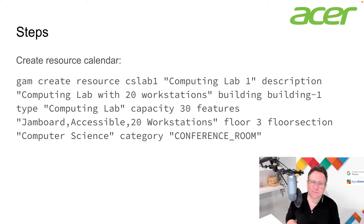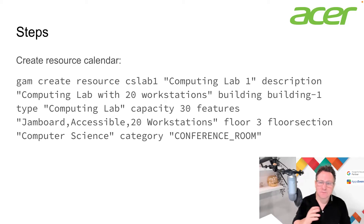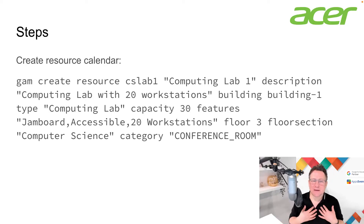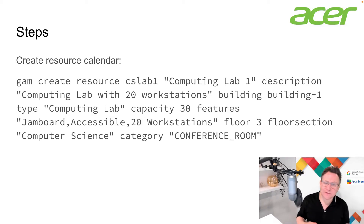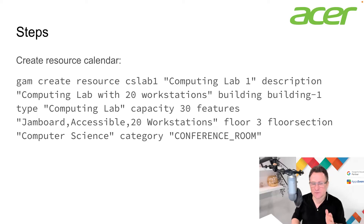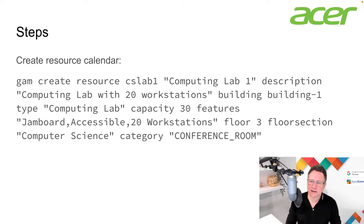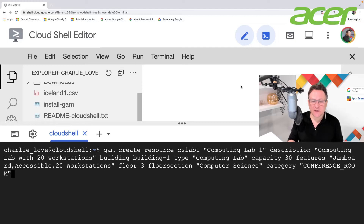This is for our computing science lab. I've got all the parameters written out: CS Lab 1 as the ID, Computing Lab 1 as the name, a description, Building 1, type Computing Lab, capacity 30. The features are inside quotes with commas and no spaces: Jamboard, Accessible, 20 Workstations. It's on floor three, the floor section is Computer Science, and the category is Conference Room because this is a bookable room space.